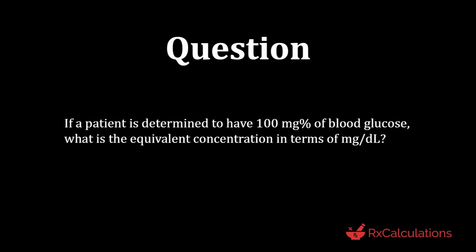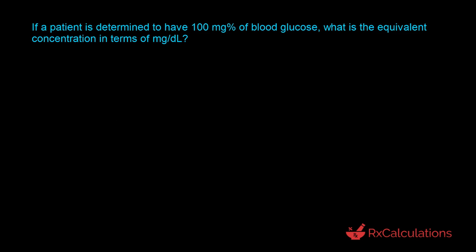Let's get right to it. The question says: if a patient is determined to have 100 mg percent of blood glucose, what is the equivalent concentration in terms of milligrams per deciliter? As a healthcare professional, one of the things you're likely to come across is values of laboratory tests expressed as milligram percent or milligram per deciliter. Milligram percent and milligram per deciliter are more or less equivalent, so it's important to understand how those two are related.